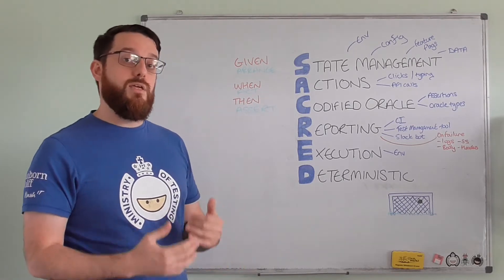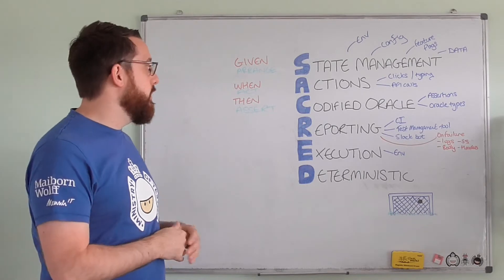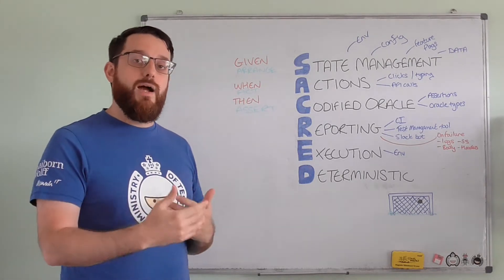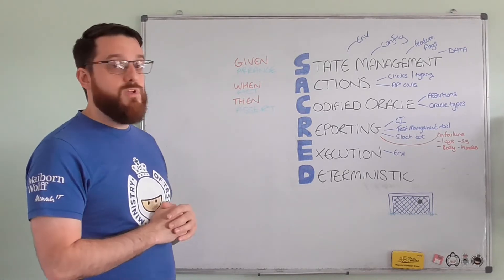Given the system's in the right state, when I do these actions, then the system should show me this behavior. And from the unit testing world: Arrange, Act, and then Assert. Again, very common. I'm not trying to reinvent the wheel.